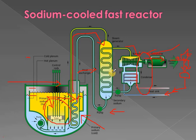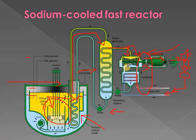The steam generator contains tubes through which water circulates. Under the high temperature of the sodium, water is converted into steam. Similar to the gas-cooled reactor, this steam strikes the turbine blades, causing rotation, and electrical energy is produced via the coupled electrical generator. The exhaust steam is condensed and the condensate is returned to the steam generator. This is the working principle of the sodium-cooled fast breeder reactor. Thank you.